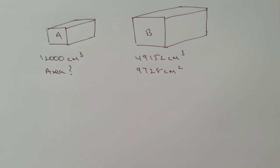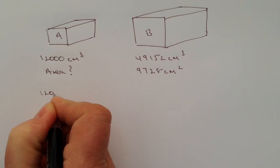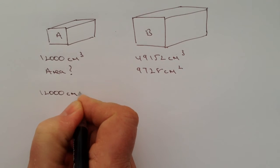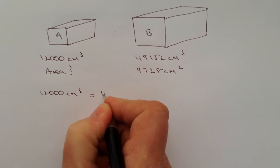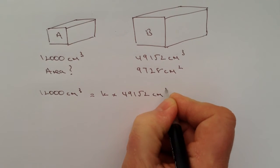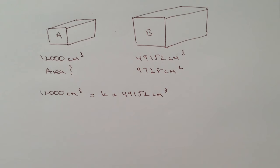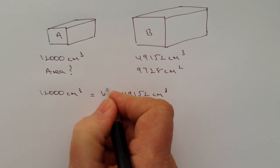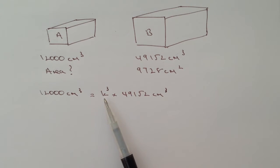The numbers themselves look a little bit daunting but really it's just a calculator question because we're trying to establish the relationship between 12,000 centimeters cubed and that's going to equal K times 49,152 centimeters cubed. Now it is a volume relationship so you've got to remember it's K cubed, and it's this constant, this scale factor that we need to work out with these types of questions.